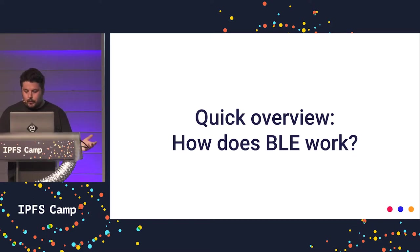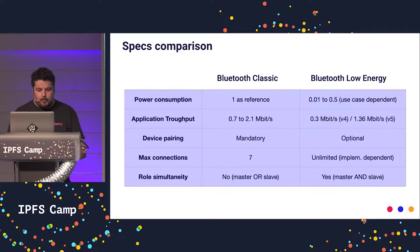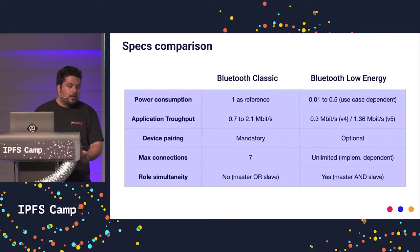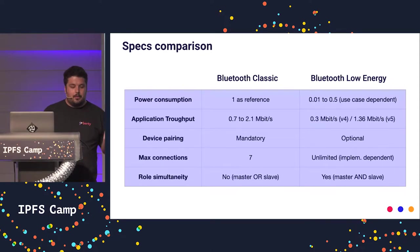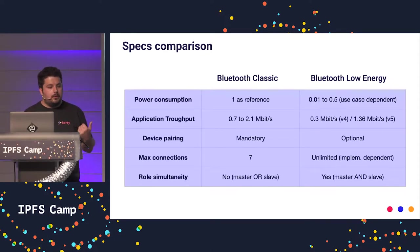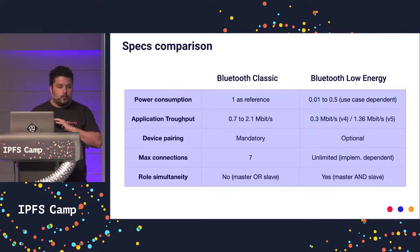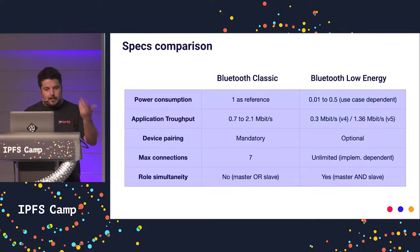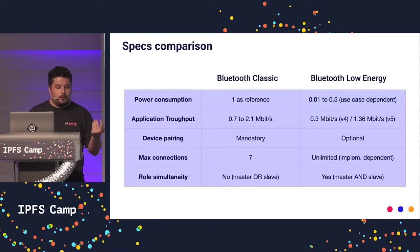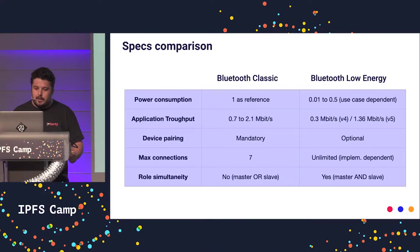Let's start with a quick overview. There is some spec comparison. BLE is less power-consuming and has less bandwidth than Bluetooth classic. One important thing is that you have optional device pairing — that means you don't need to go to your OS settings to pair your device; you can do everything in code. The protocol has an unlimited number of max connections, only dependent on the chip and OS you use, as we'll see in the next slide.